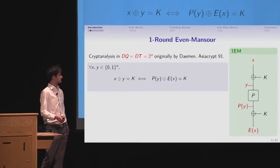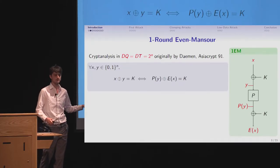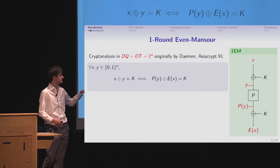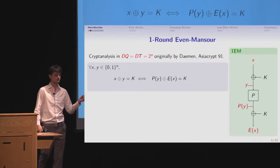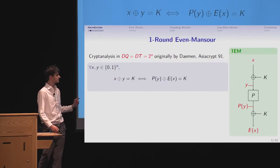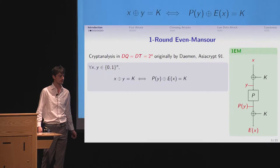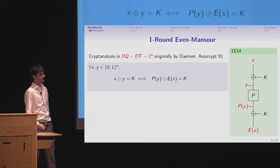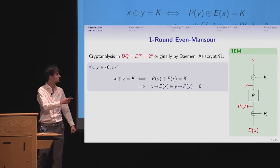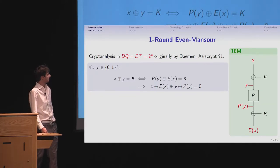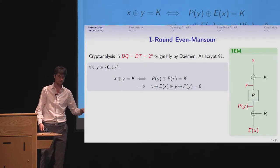How does it work? I'll give you a brief overview. I just first named the variables. I have x and E of x input-output of the keyed permutation, y and P of y input-output of the public permutation. And then you have this property that if x and y differ by the key, then by construction, you have to have that P of y and E of x also differ by the key, just because that's how it's built.